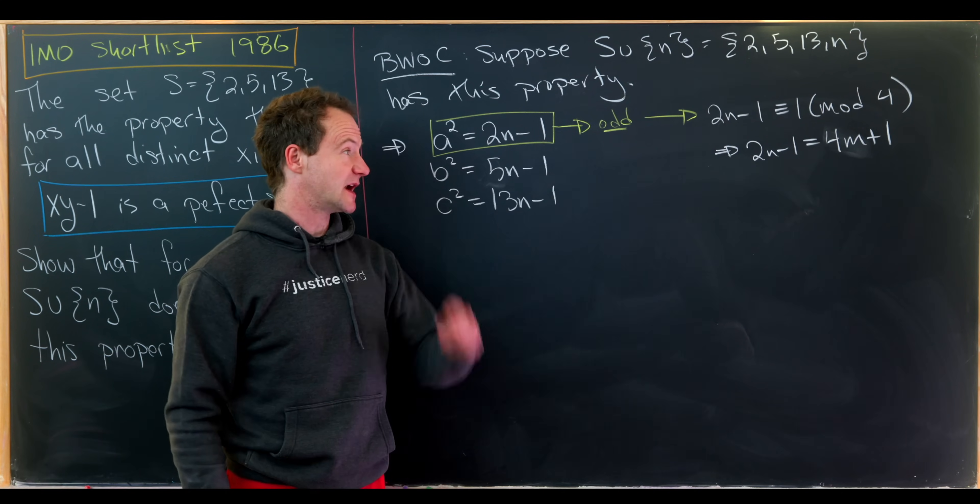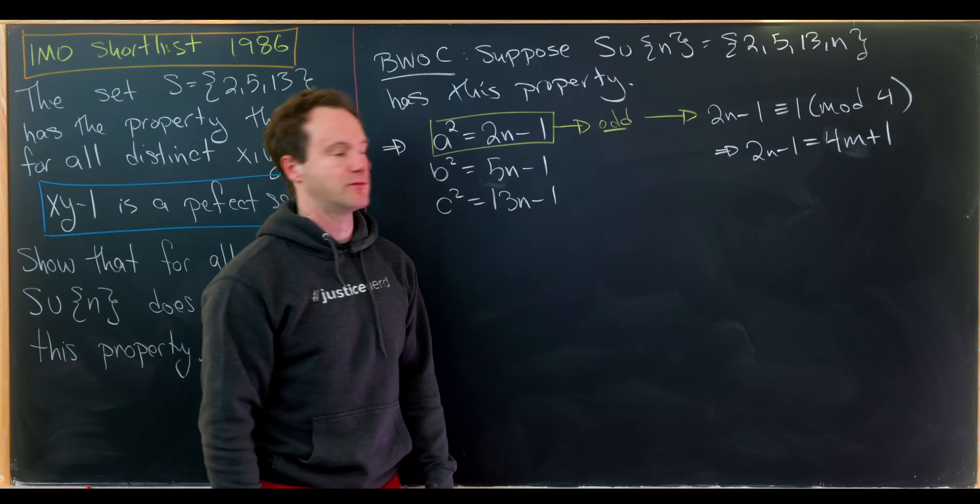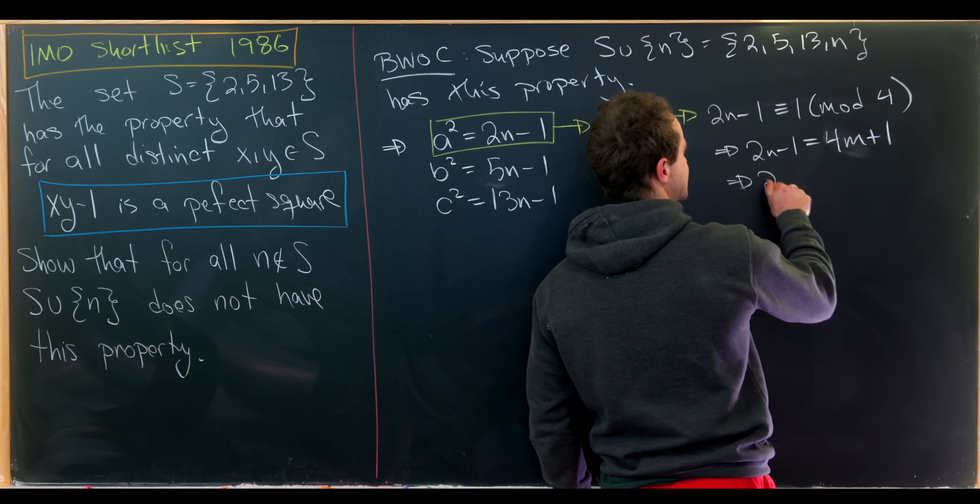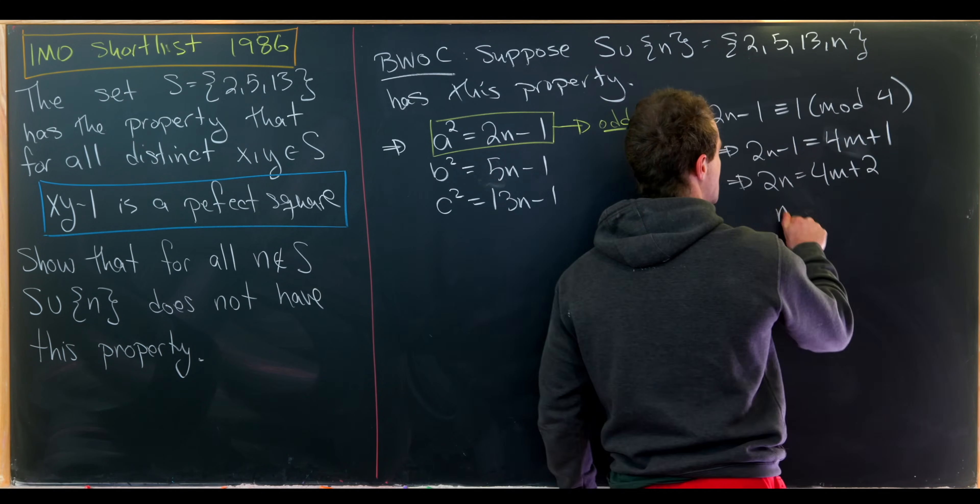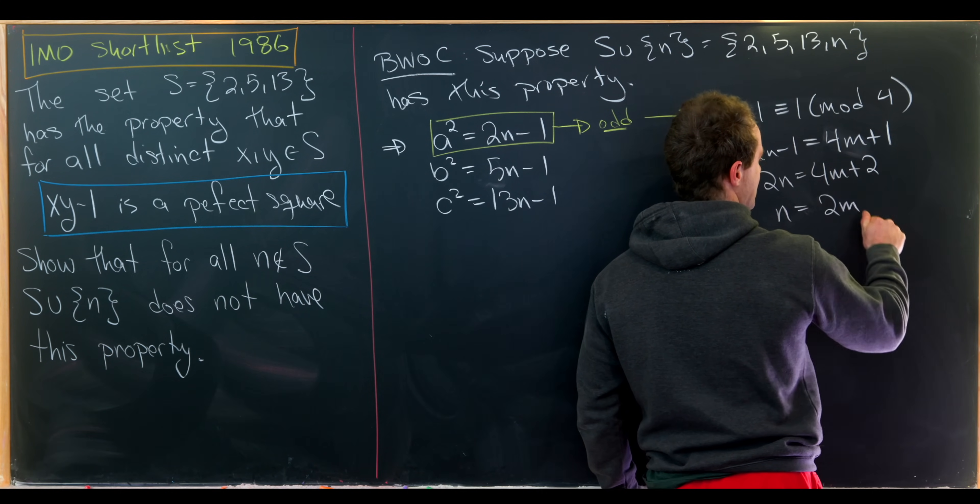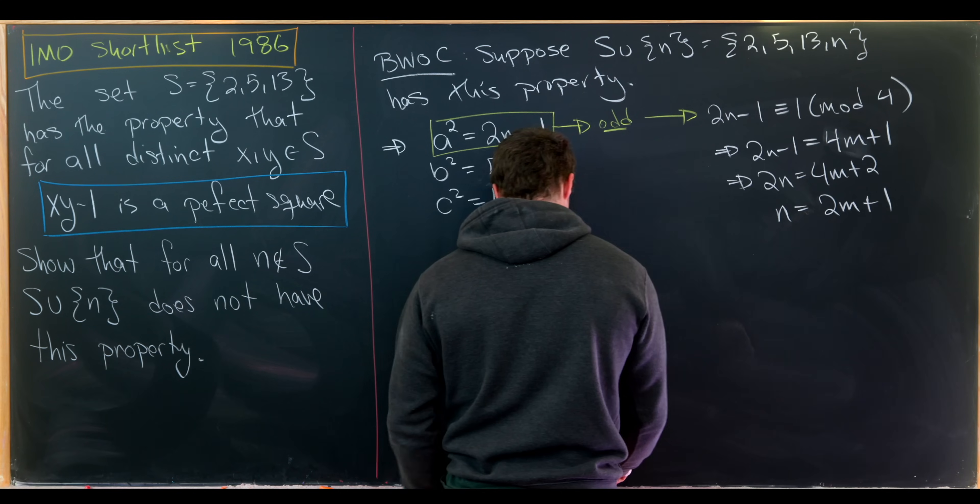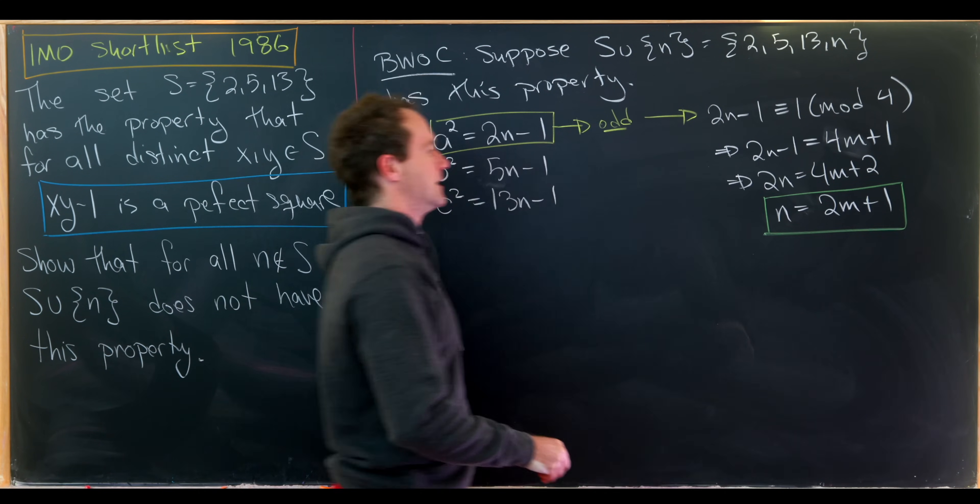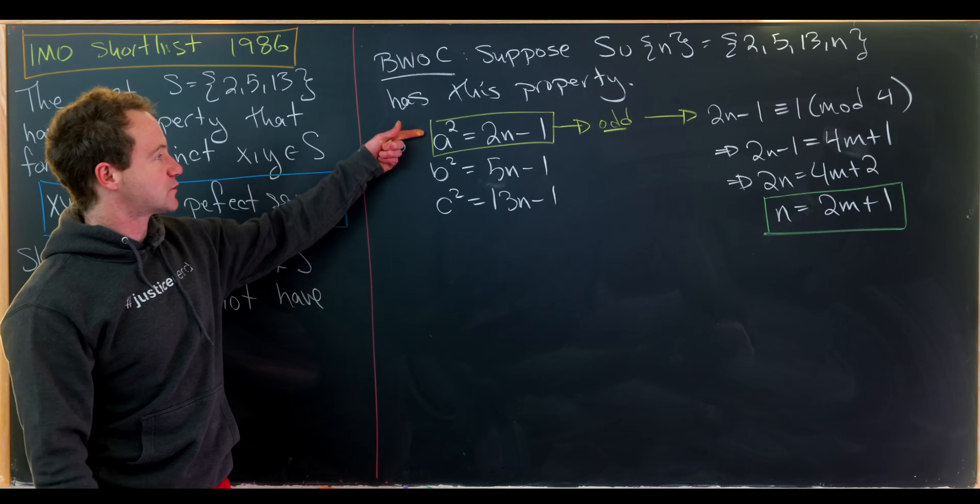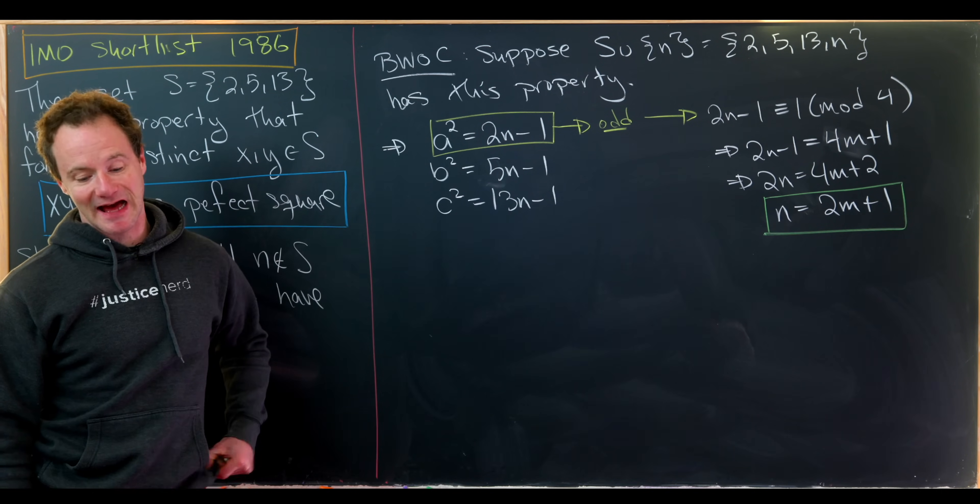So we have 2n minus 1 is of the form 4m plus 1. Now we can move some things around and we'll see that 2n is in fact equal to 4m plus 2, which means n is of the form 2m plus 1. So in other words, n is odd. So this rule right here told us that n had to be odd.